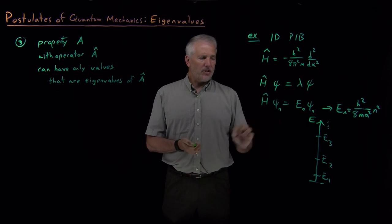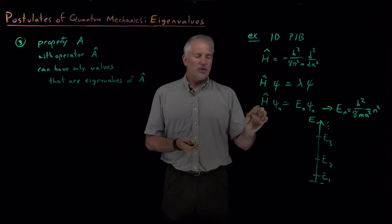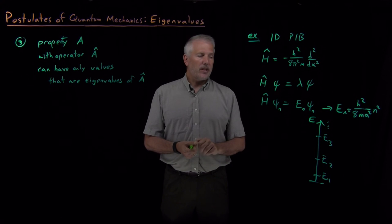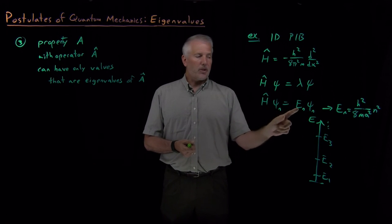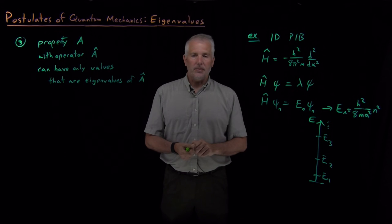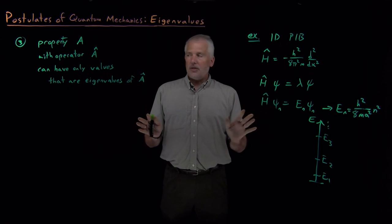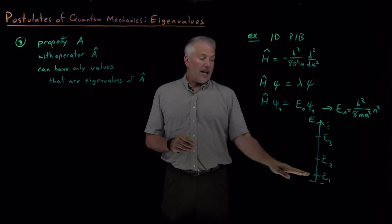And we'll have occasion to do that, but by far the most useful property in a chemistry context is often the Hamiltonian because we're interested in the energies of the molecules. So this tells us how to find the allowed values of the energy.